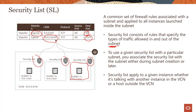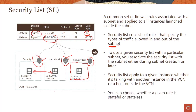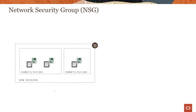Security lists apply to a given instance whether it's talking with another instance in the VCN or a host outside the VCN. This is really important. If these two instances want to talk to each other, you would still need to open the security list on both sides. Otherwise, they cannot communicate with each other — which totally makes sense because it enforces more security. You can also decide whether a given rule is stateful or stateless, which we'll discuss in more detail shortly.